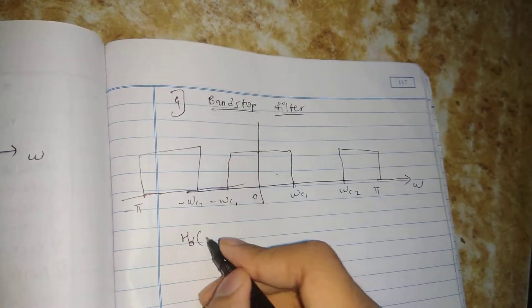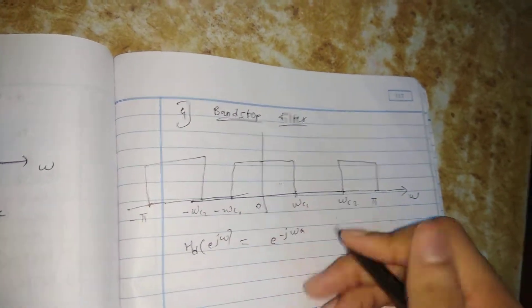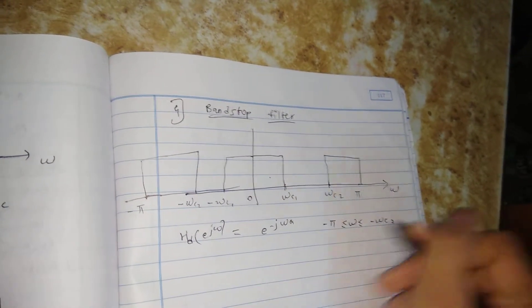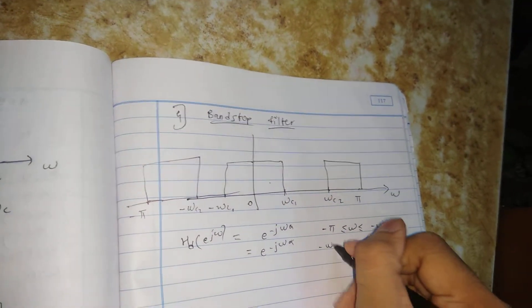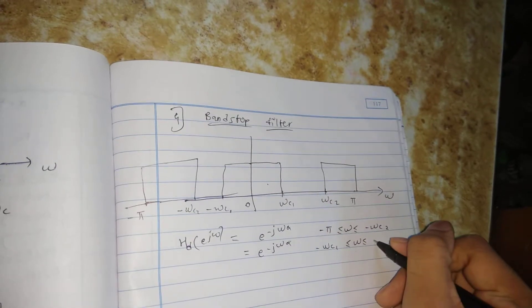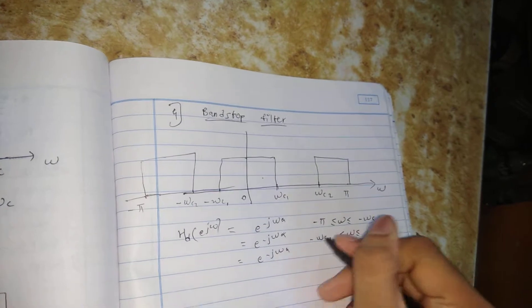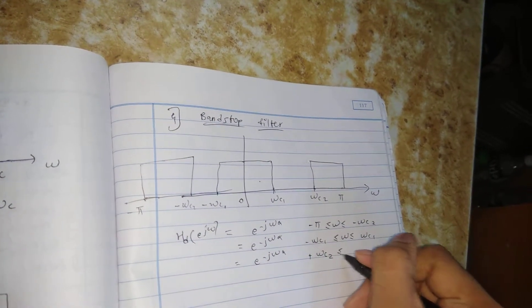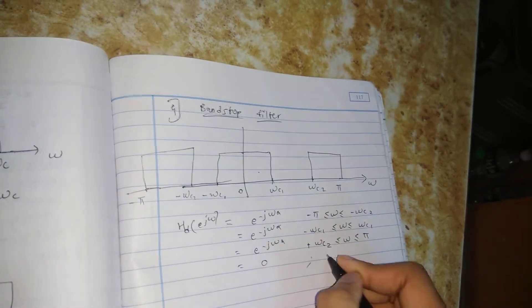Now write the equation for the band stop filter. HD of e raised to j omega equals e raised to minus j omega alpha. Range 1: minus pi less than omega less than minus omega C2. Range 2: minus omega C1 less than omega less than or equal to omega C1. Range 3: plus omega C2 less than omega less than or equal to pi. Equals 0 otherwise.